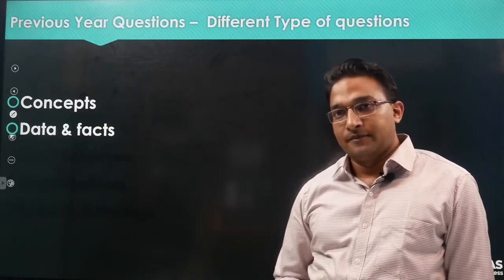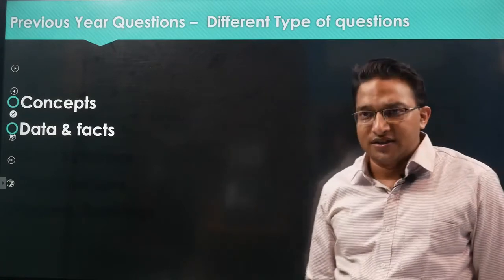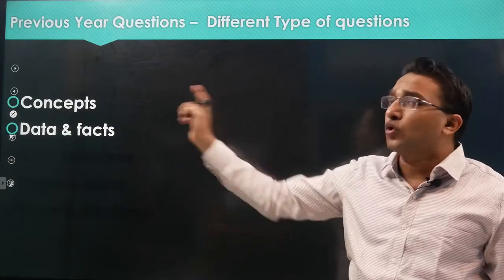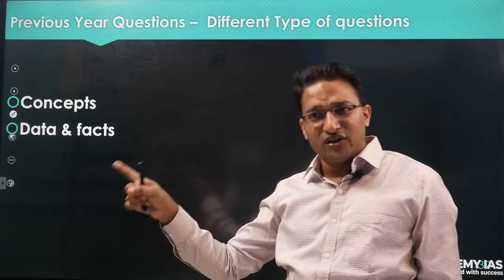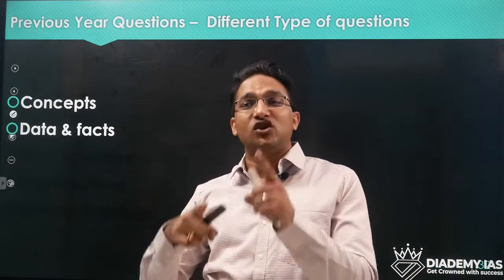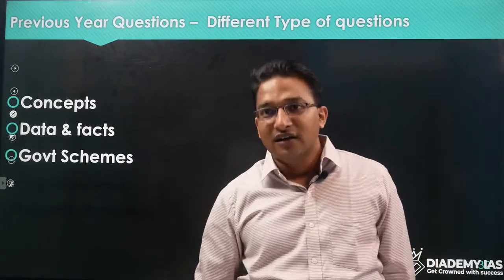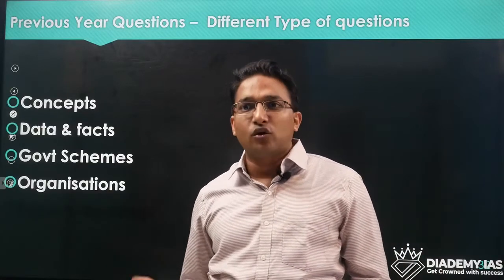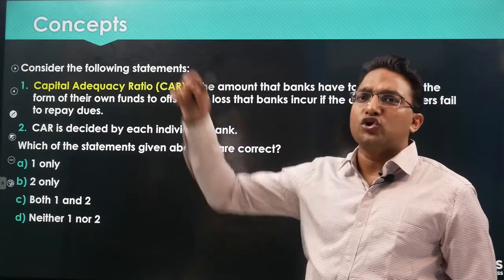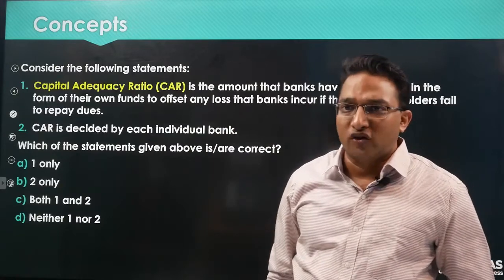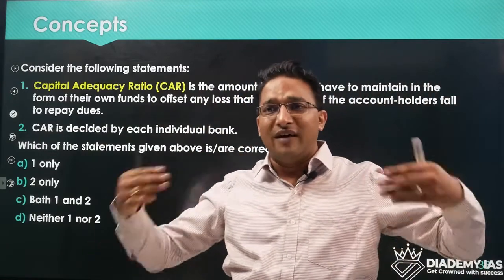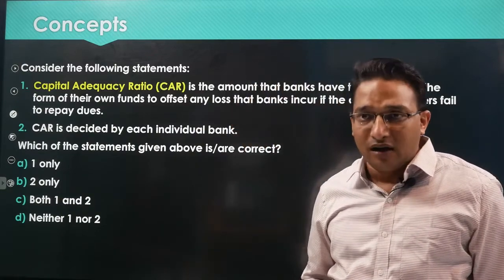In the previous year questions, there are different categories: conceptual questions like the inflation question we discussed, data and facts questions asking about trends rather than exact numbers, government scheme questions about features and eligibility, questions on national and international organizations asking about membership and jurisdiction, and questions on reports like the Global Competitiveness Report, Transparency International, and reports from WTO, World Bank, and IMF.